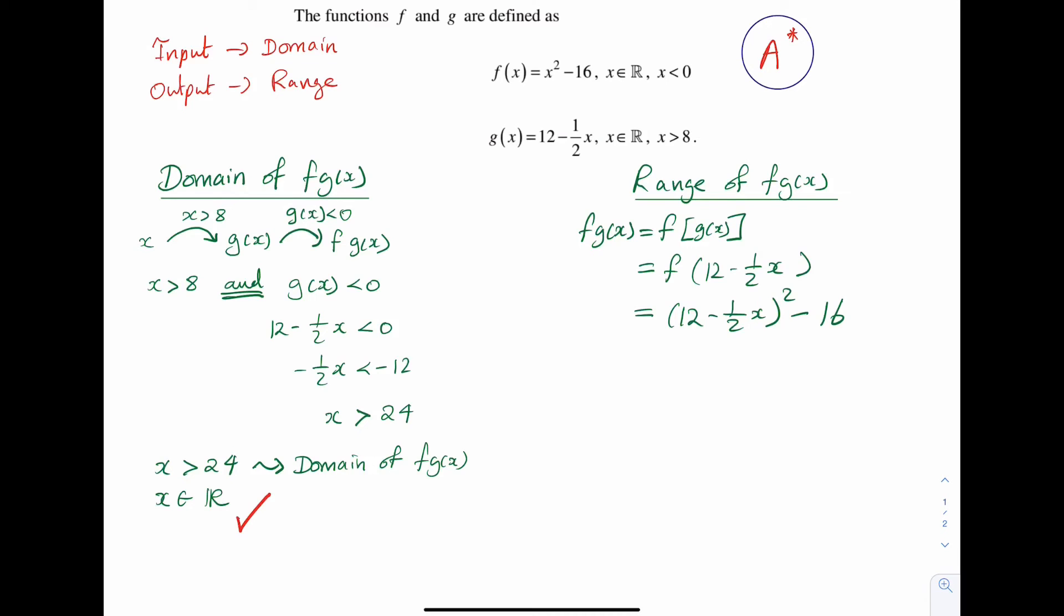The x-coordinate for the turning point is calculated by setting 12 minus a half x equal to 0. If I solve this particular equation, I get x equal 24. The y-coordinate for the turning point will just be minus 16.